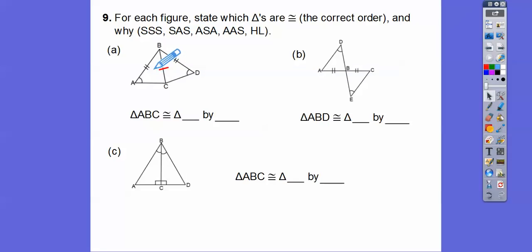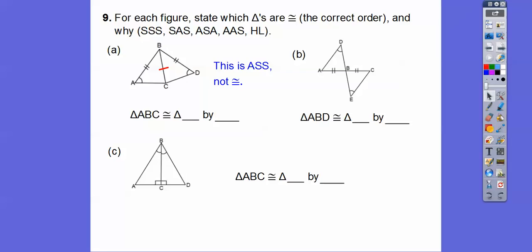If it was side-angle-side, this angle would be the included angle. But this is a non-included angle, making it angle-side-side. Don't make an angle-side-side of yourself — they're not congruent. I showed you an example of why a couple of lessons ago.